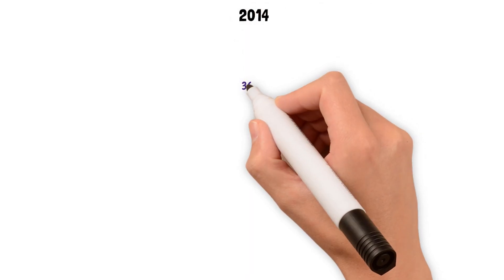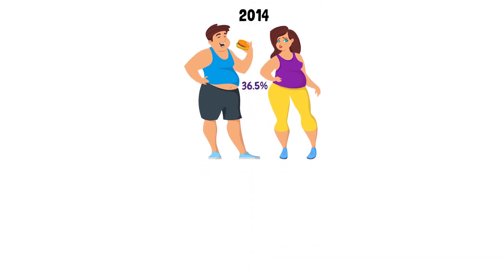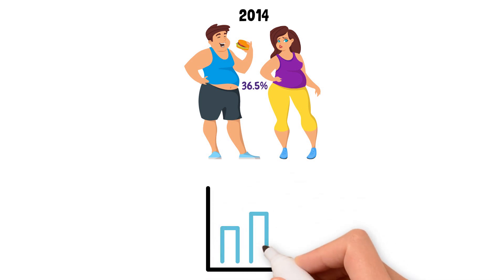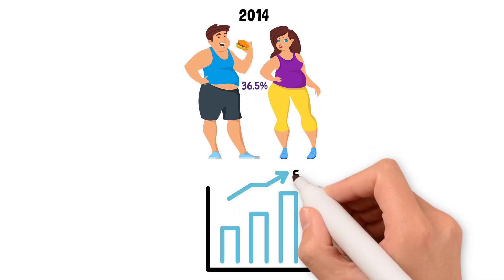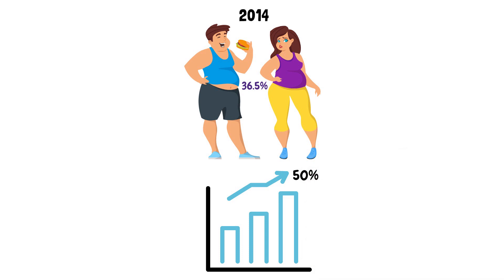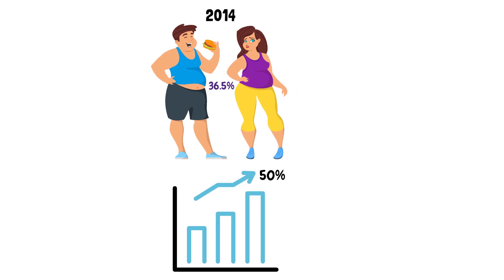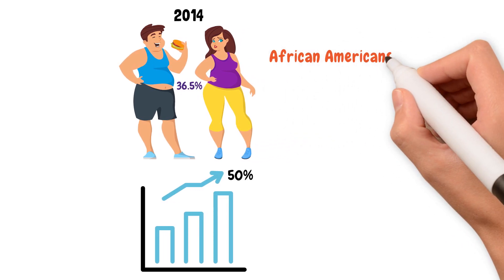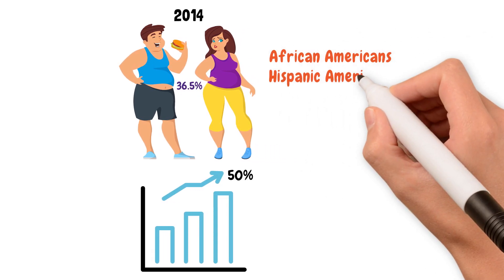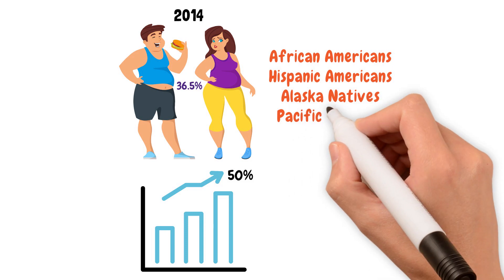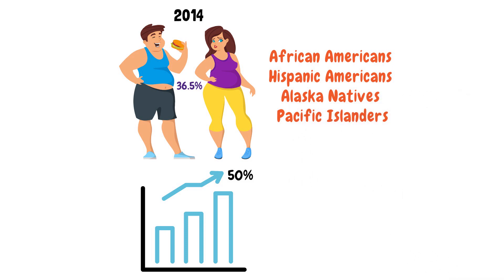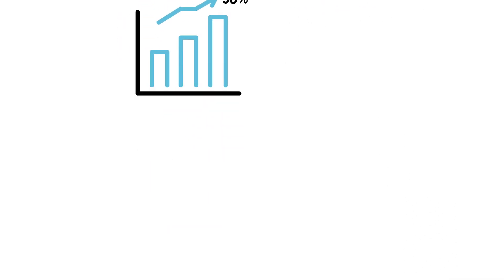Did you know that in 2014, 36.5% of American adults were obese? And did you know that this number is projected to rise to about 50% by 2030? In fact, obesity rates are highest among certain groups, including African Americans, Hispanic Americans, Alaska Natives, Pacific Islanders, and those of lower socioeconomic status.